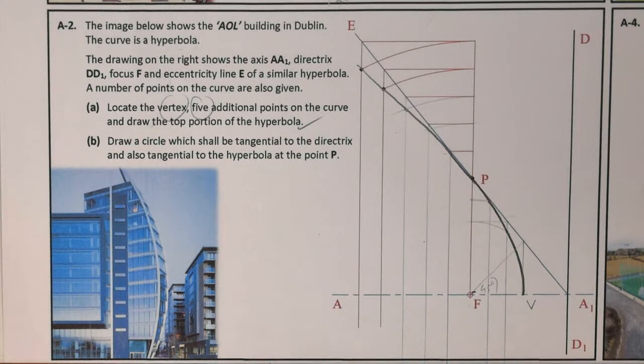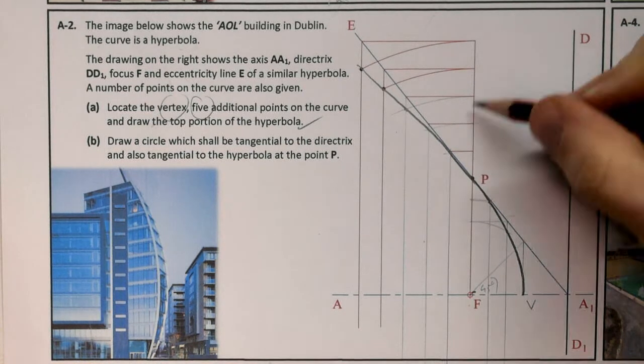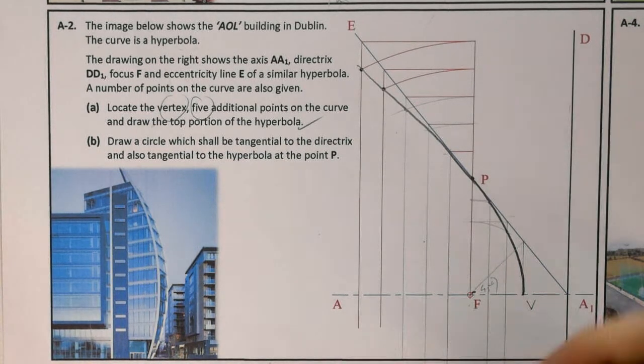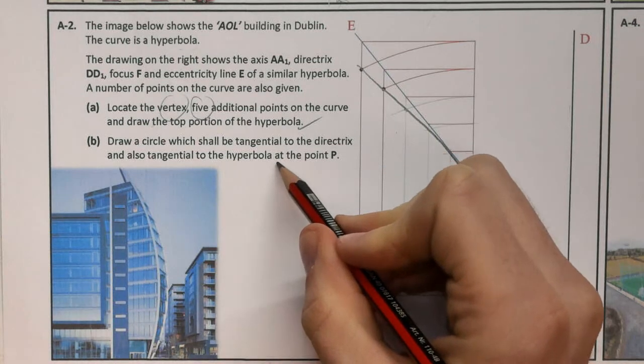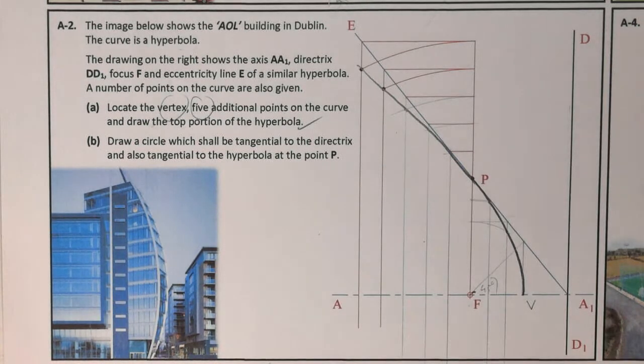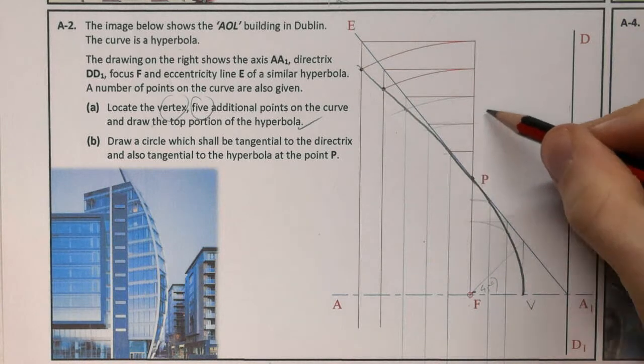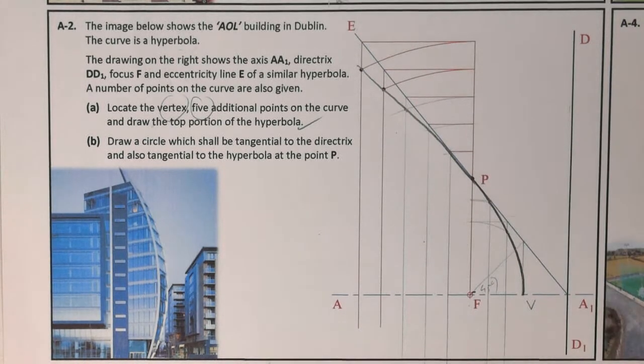Draw a circle which shall be tangential to the directrix, sitting here, touching off of the directrix at one point, and also tangential to the hyperbola at point P, touching off of point P as well.